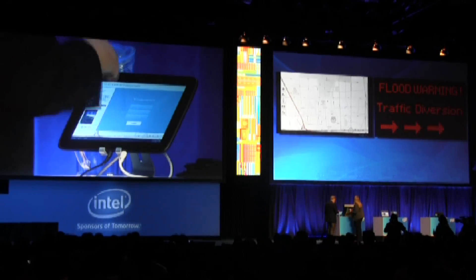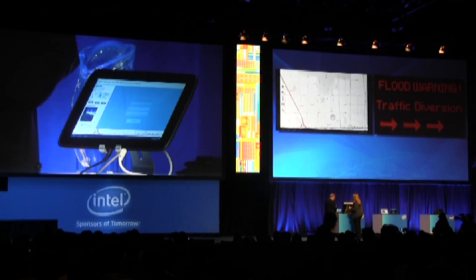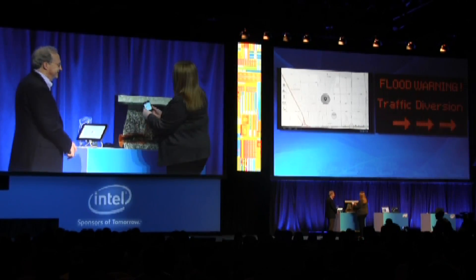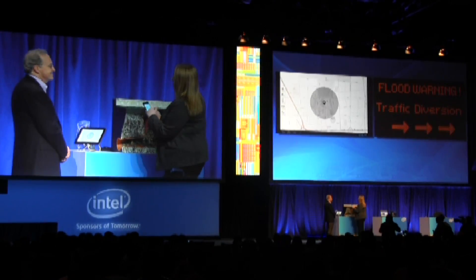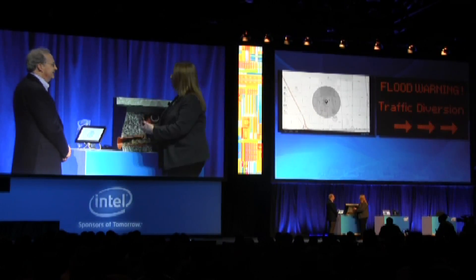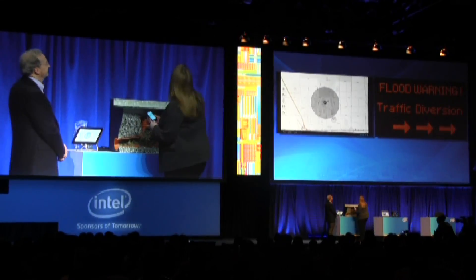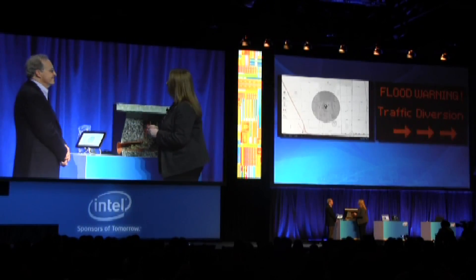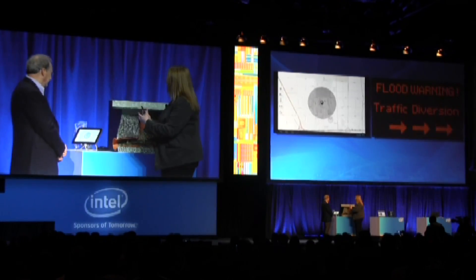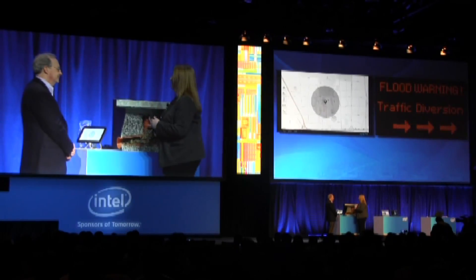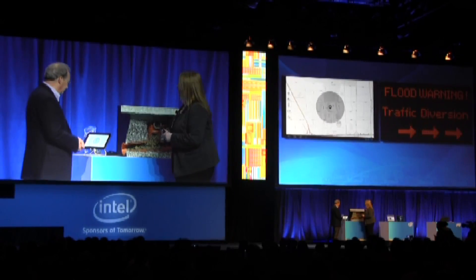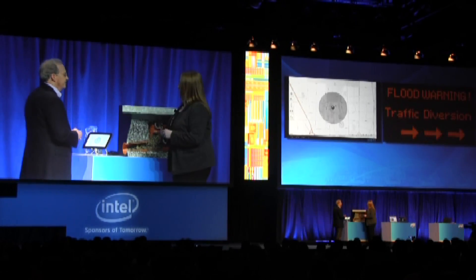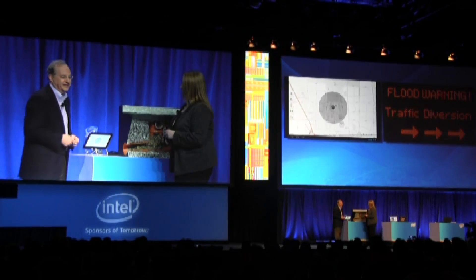And reward the citizen subscriber — confirming it all. I have received extra points for giving information to the city, which incentivizes me to give more information back. You'll see that a flood warning and a traffic diversion have happened, routing traffic away from the area. All these data sources are coming together to inform city management and the citizens. It sure makes managing a complex city a lot easier when you can sit here, watch these events play out, and take action.